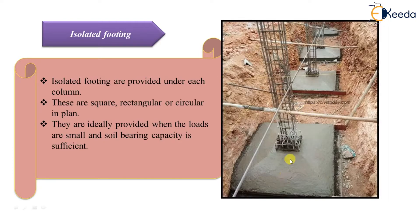Here in this diagram, you can see that under each column, a footing is provided — this is what we call isolated footing. Under isolated footing there are two subtypes: uniform thickness footing and tapered thickness footing.